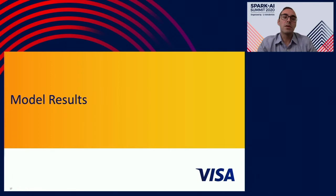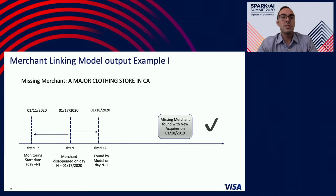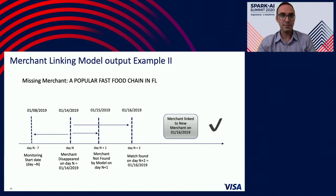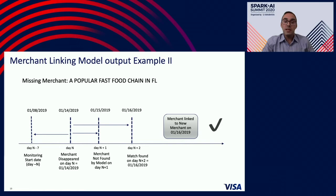Now let's look at some model results. Here we have a major clothing store in California. We started monitoring the merchant on January 11th, 2020. On January 17th, we found the merchant to be disappeared. At that point, our linking model starts. On the next day, we are able to find that the missing merchant has a new acquirer and our model is able to successfully link. Here is another example: a popular fast food chain in Florida. We started monitoring on January 8th, 2019. On the 14th, the merchant disappeared. Our linking kicks in. The first day we did not find it, but the next day we are able to find the match and link the missing merchant.